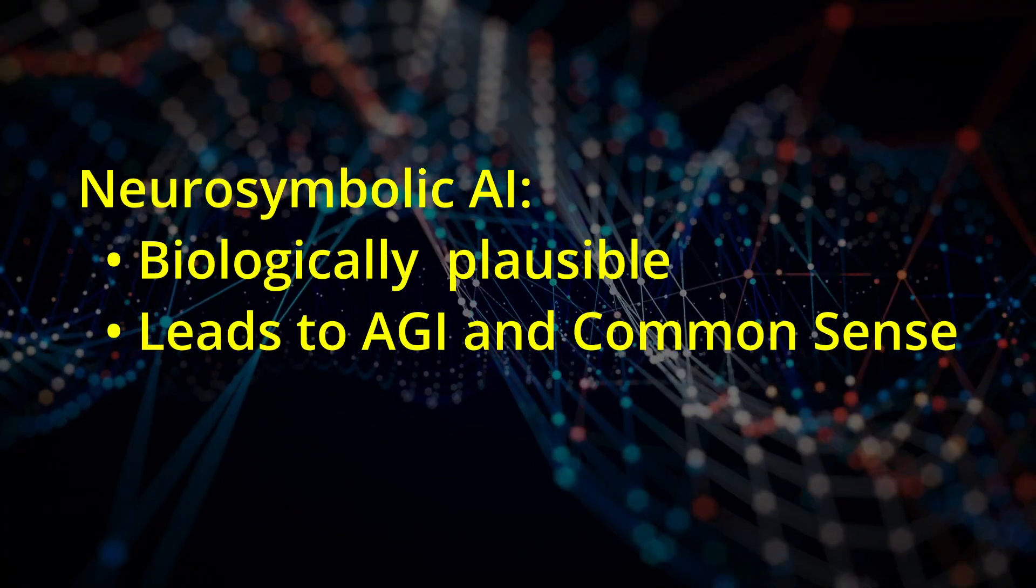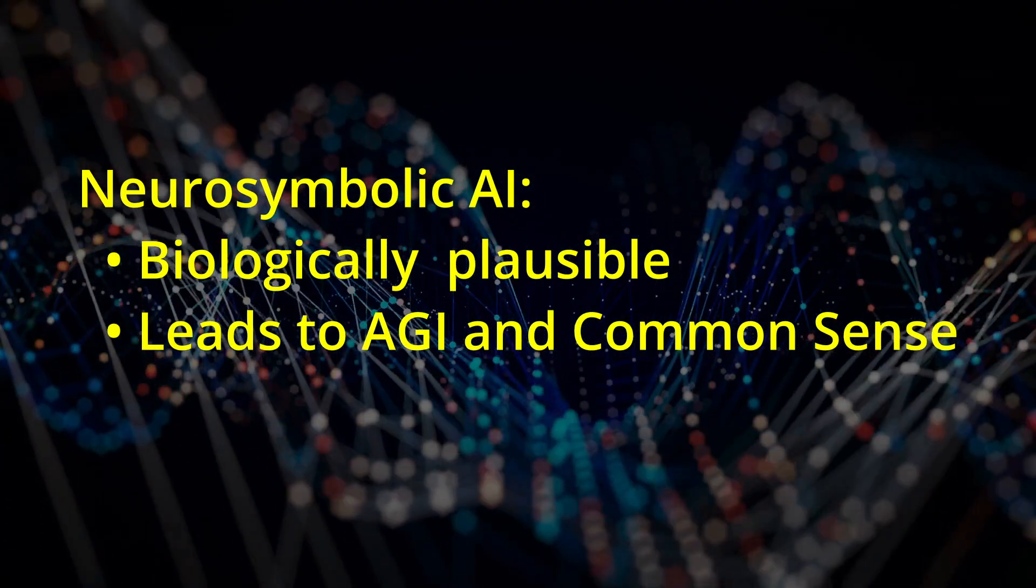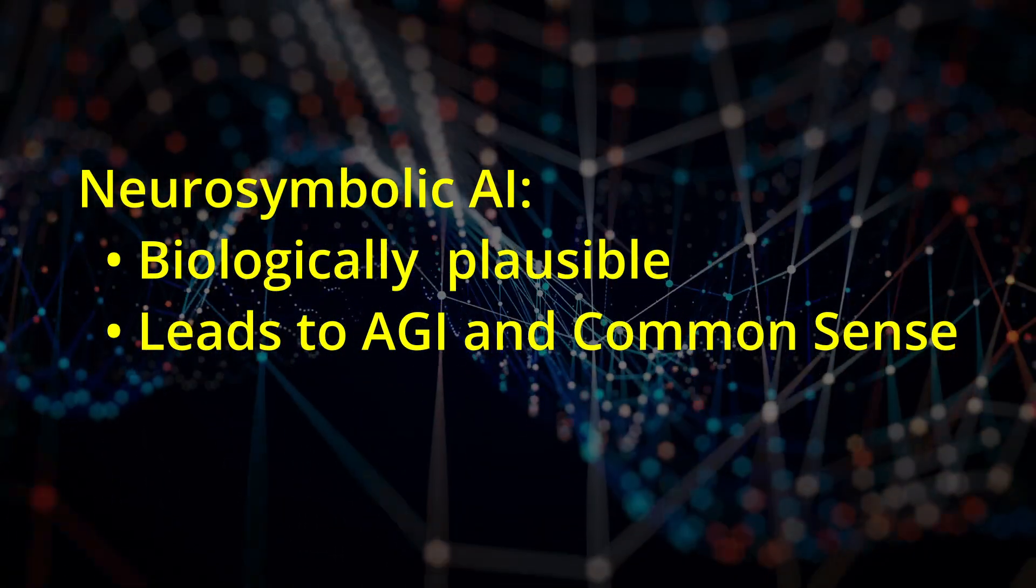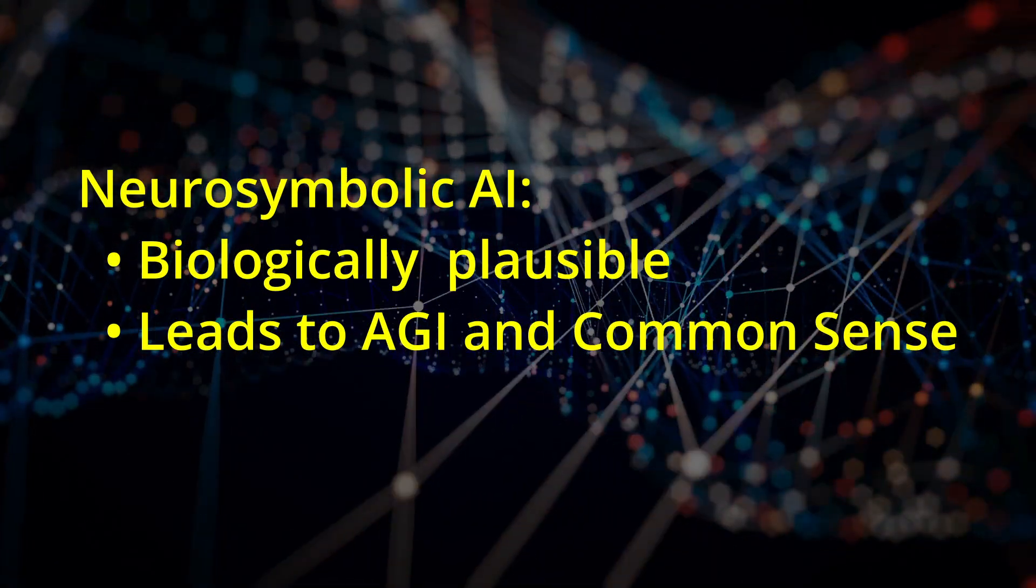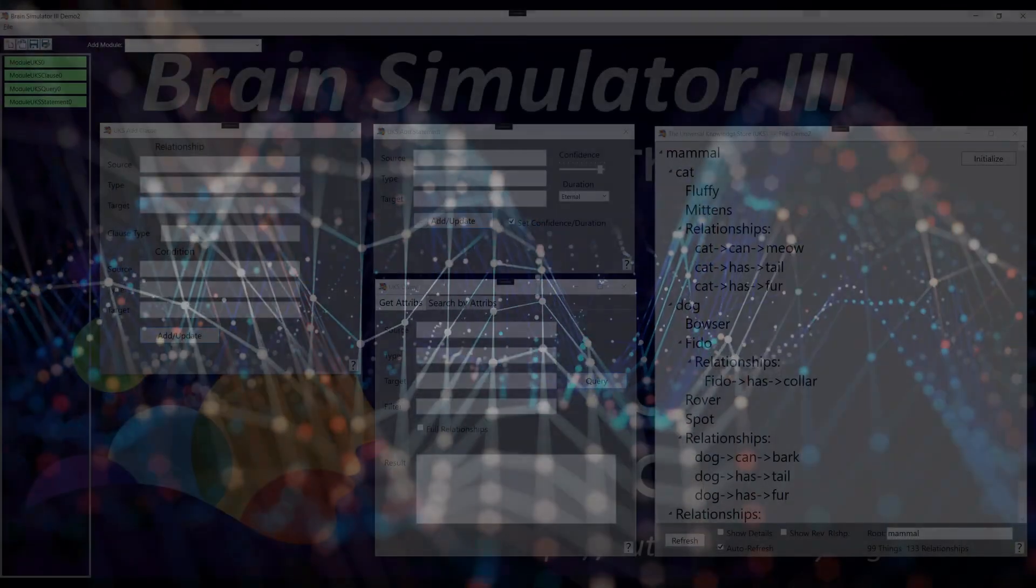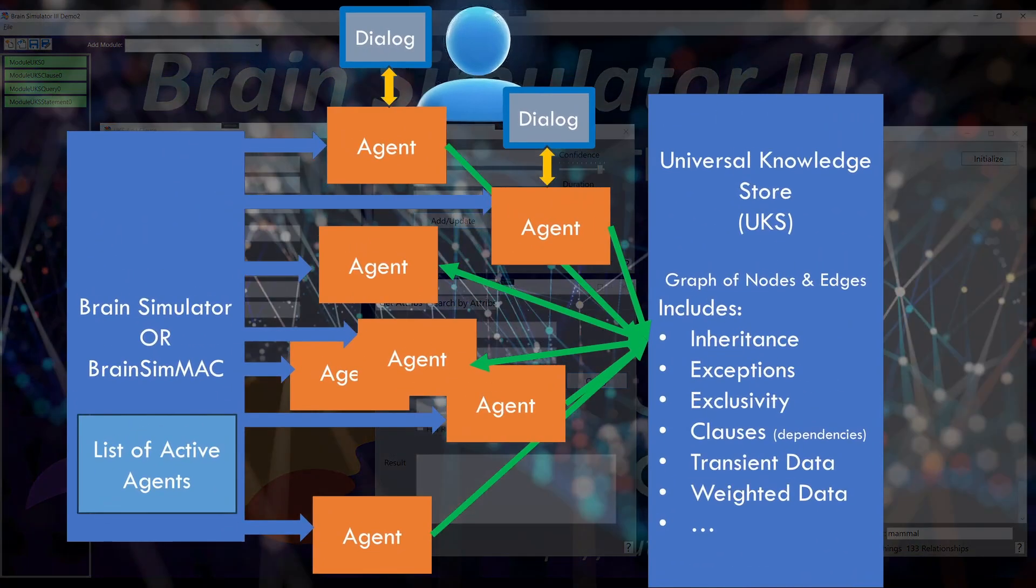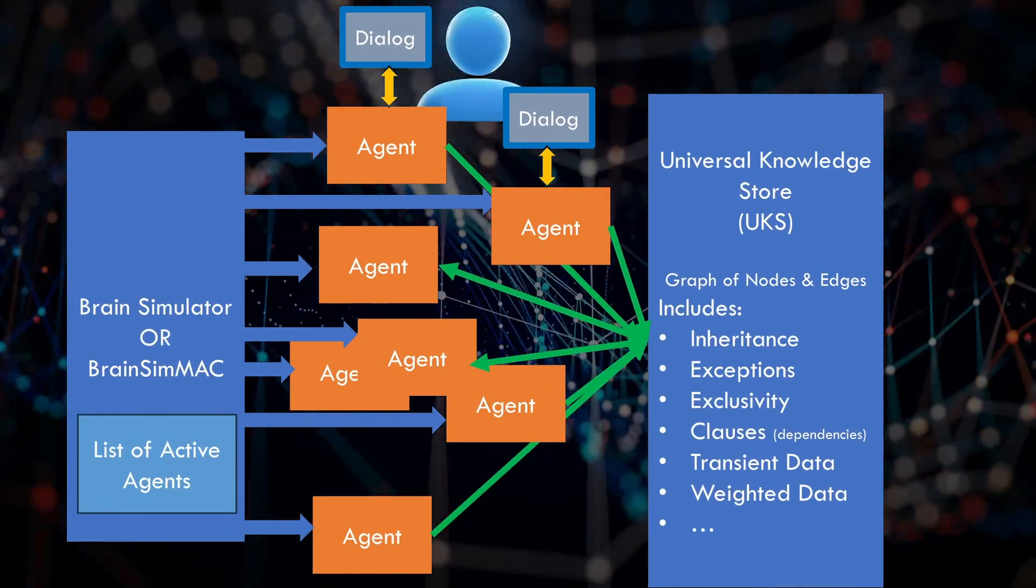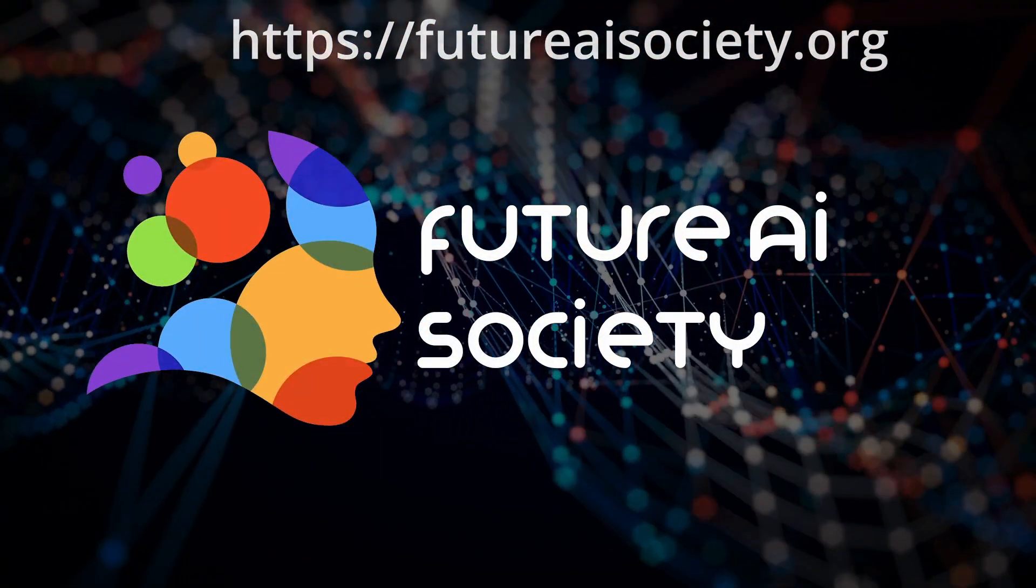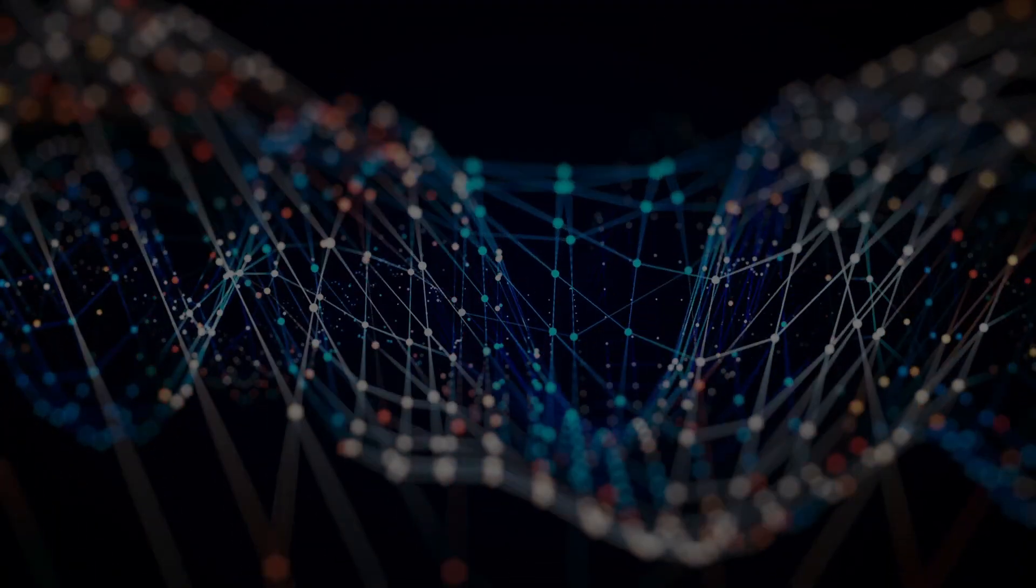I've just scratched the surface in this video. This neurosymbolic approach outlines a system which works the same way the human mind does. In subsequent videos, I'll introduce more capabilities and the benefits such a system brings. Most of these capabilities are already implemented in our project, the Brain Simulator 3. You can download the project from GitHub at the link in the description. You can also join the Future AI Society to learn more and participate in our monthly online meetings and enhance the development of this software which forms the basis for the future of artificial intelligence.